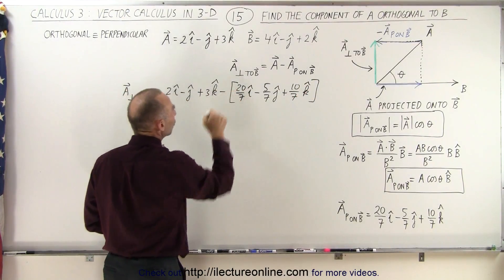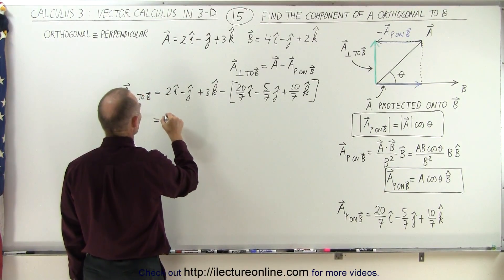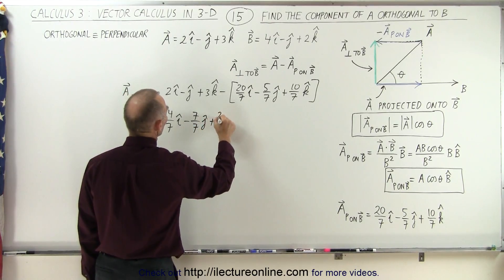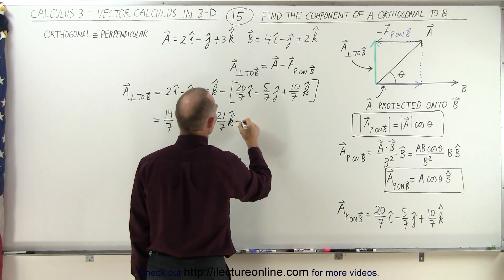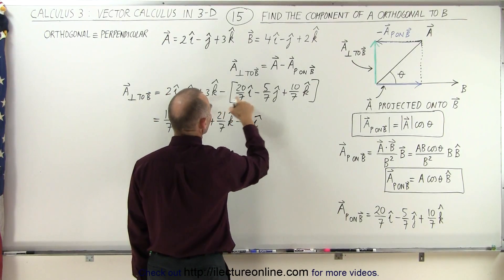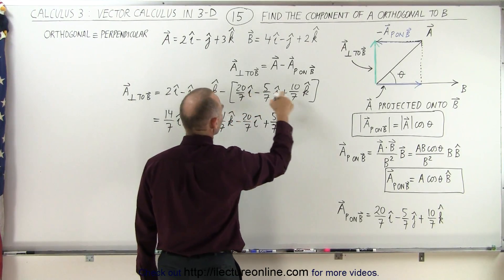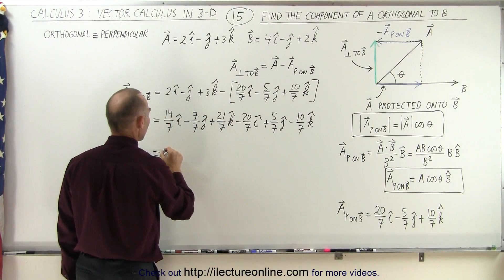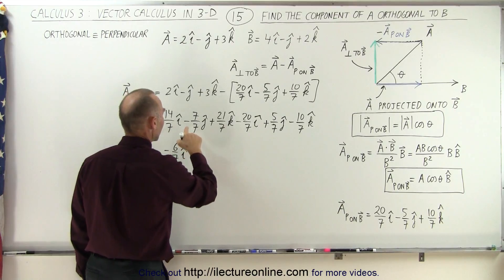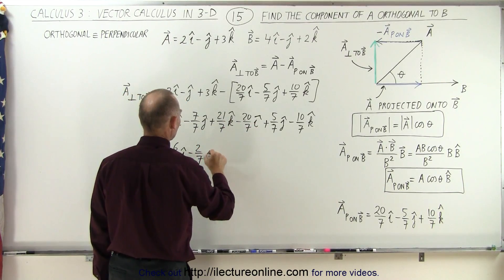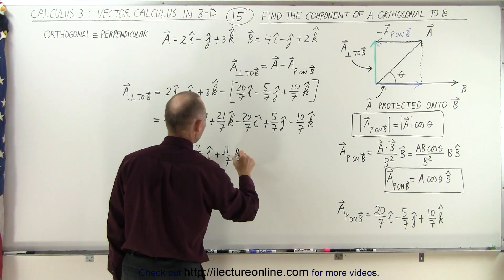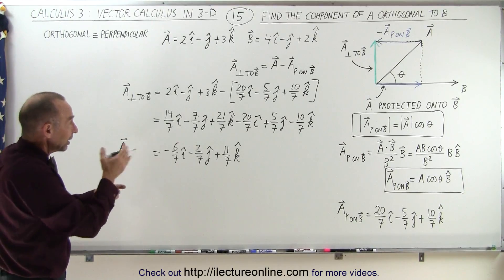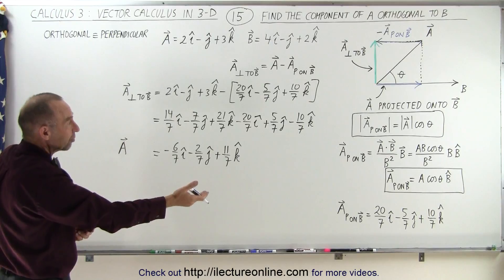So 2 minus 20 over 7 — putting on the same denominator, that would be 14 over 7 I, minus 7 over 7 J, plus 21 over 7 K, subtract minus 20 over 7 I, minus 5 over 7 J, and minus 10 over 7 K. Now we can collect the common terms: 14 minus 20 is minus 6 over 7 I, minus 7 plus 5 is minus 2 over 7 J, and 21 minus 10 is plus 11 over 7 K. This is actually relatively easy — once we find the projection of one vector, to find the perpendicular vector we simply take the projection and subtract it from the original vector.